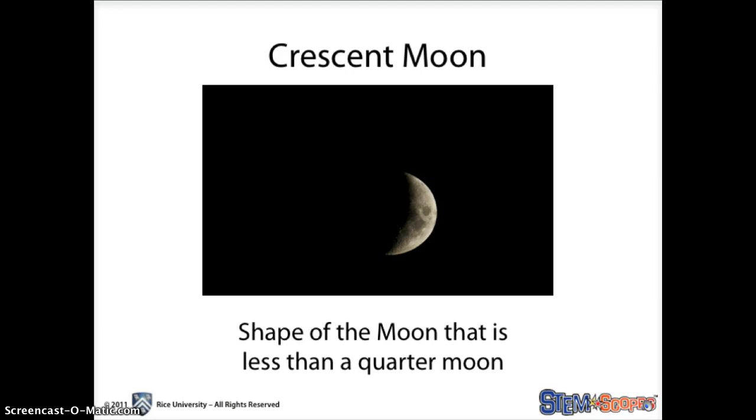Crescent Moon. This is the shape of the moon that is less than a quarter moon. This is the phase of the moon between a new moon and the first quarter moon, and also between the last quarter moon and the new moon.